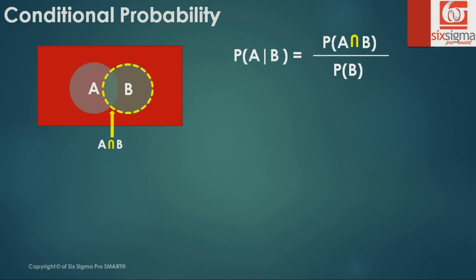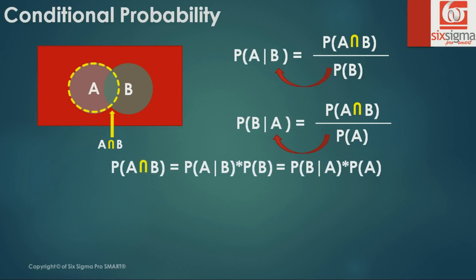Likewise, if we were to estimate the probability of B given A, which is the probability of occurrence of B given that event A has already occurred, you simplify it by assuming the sample space has shrunk to A. The probability of B given A is probability of A intersection B divided by probability of A. If we rearrange the denominators of these two equations, we arrive at equation 1.